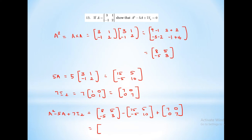Computing each element: 8 minus 15 plus 7 equals 0. 5 minus 5 equals 0. Minus 5 plus 5 equals 0. 3 minus 10 plus 7 equals 0. Which equals the zero matrix, 0. Hence exercise 3.19 is complete. See you soon with the next video.